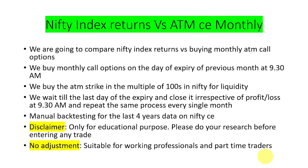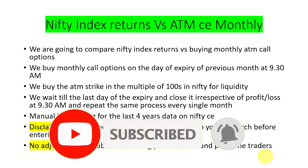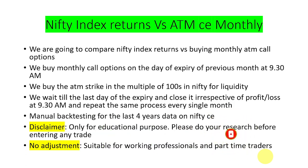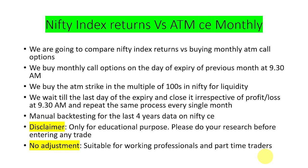Hi, this is George. In this video we are going to see about Nifty index returns with buying ATM call option monthly. What we will be doing is buying a monthly call option on the day of expiry of the previous month at 9:30 AM. For example, for February we buy on January's last Thursday — we buy the ATM call option for February expiry, and close it on February's last Thursday. Then on February's last Thursday we buy the ATM call option for March, close it on March expiry, and open April's ATM call option.